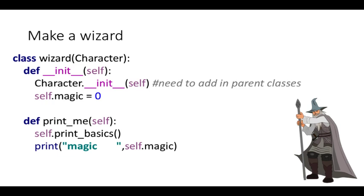Here is class wizard. Notice how it's got character. That means it's going to inherit automatically all of the methods from character. However, you also need to initialize character as part of this. So you see the character.__init__(self). That's important to add the parent classes in terms of their attributes.